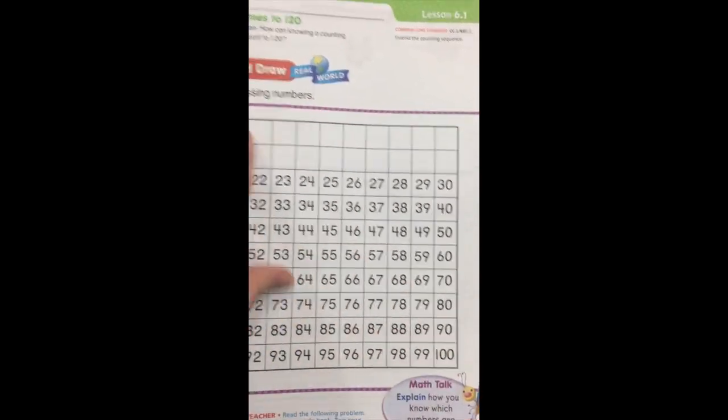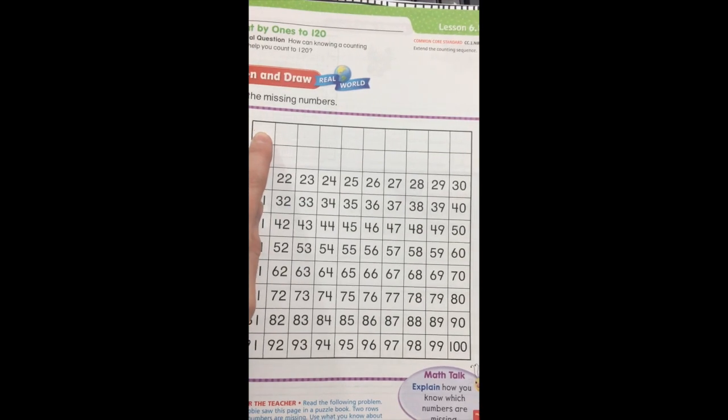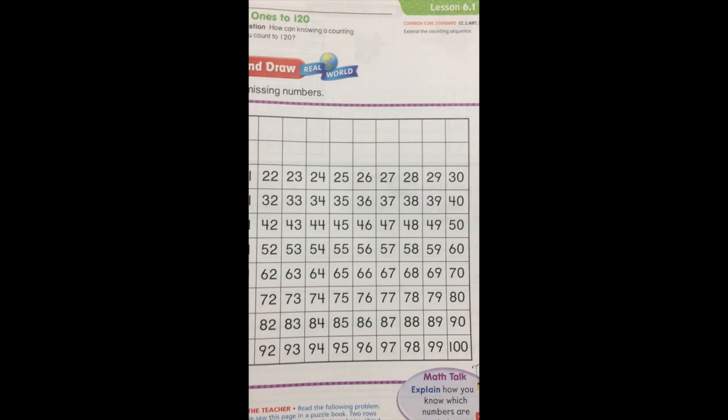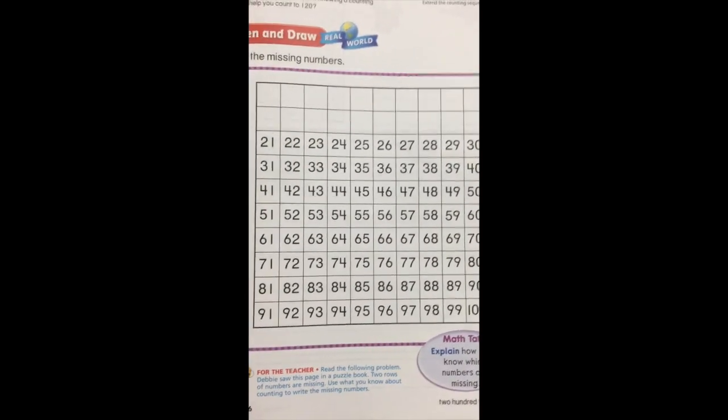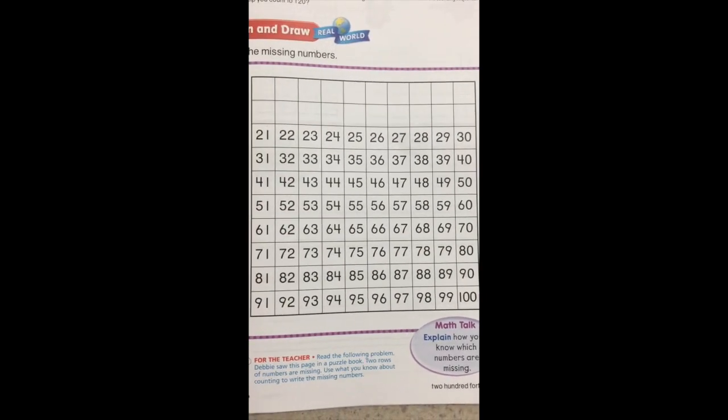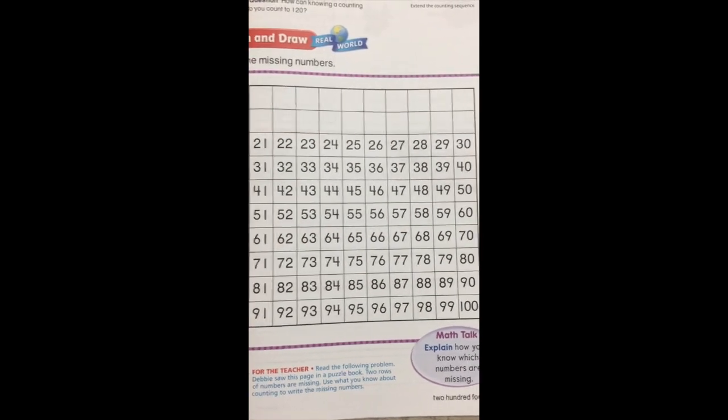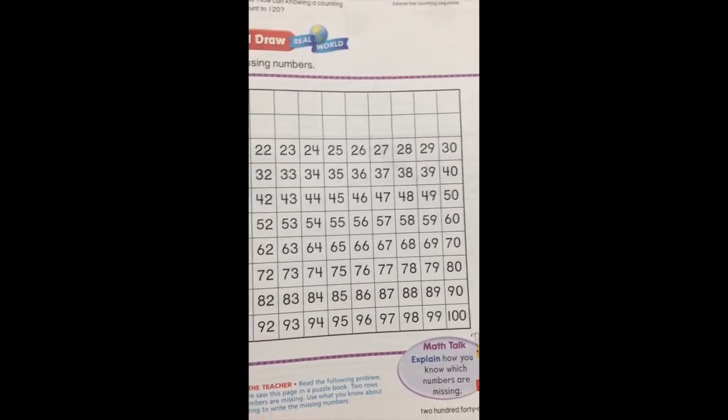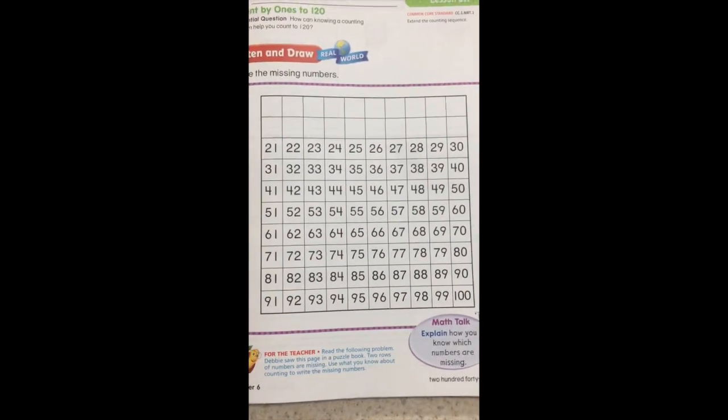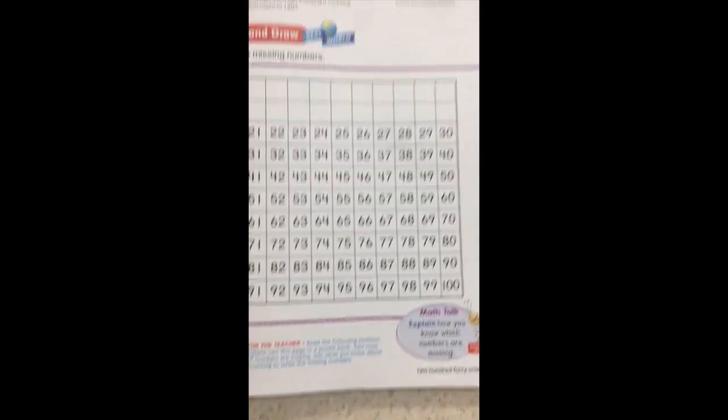What do we know about numbers? Do the order of numbers ever change? Will one day we start 100 here and then go 1, 98, 99? Yeah, absolutely not. Numbers are always in the same order. Their order never changes. So it's kind of like a pattern. Every single time we count, we know we're going to start at 1, and we know that if we're counting to 100, we're going to end at 100, and all the numbers in between are going to be in the same order.